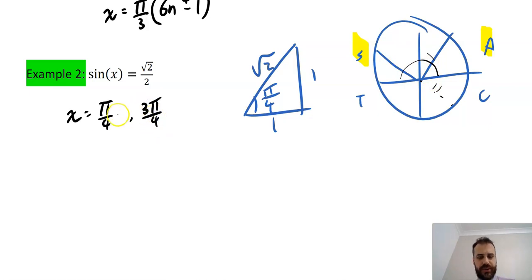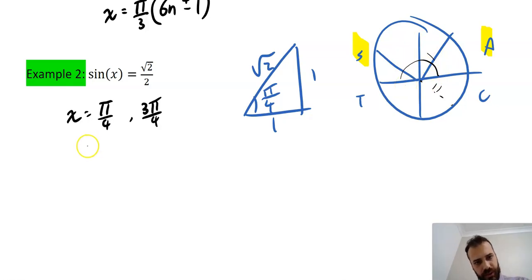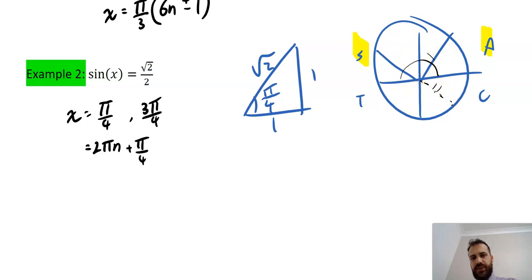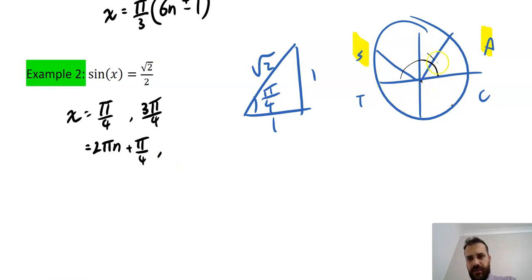Now what do we do with these? I'm doing the same thing as before: going one full rotation, which is 2π, and putting n on it so I can do as many rotations as I want as long as n is an integer. My first answer is 2πn plus π/4. You might think we'd put a plus or minus in there — but no, not this time, because 2πn minus π/4 would land us in the wrong quadrant. So just plus. The other solution is 2πn plus 3π/4.